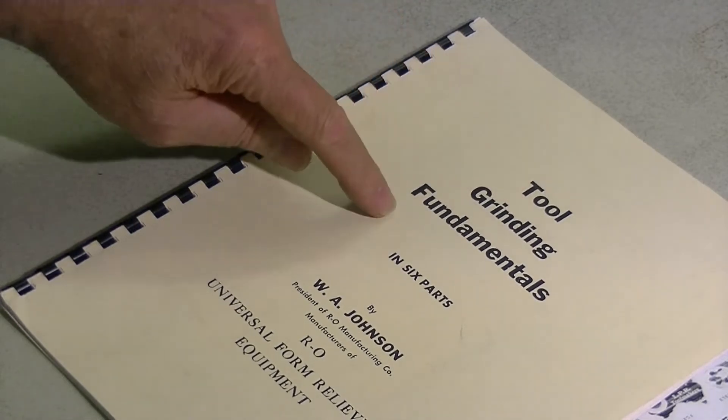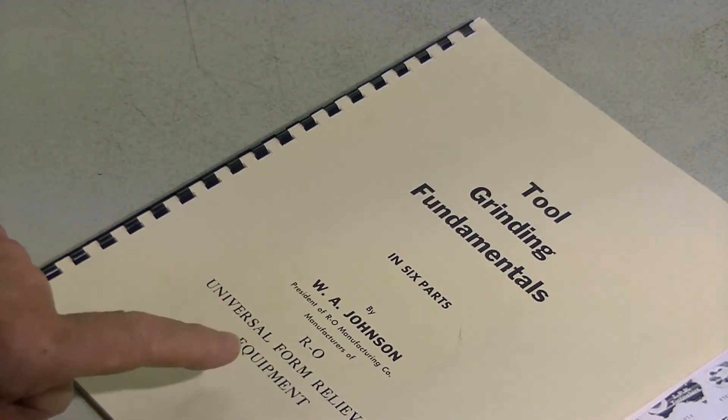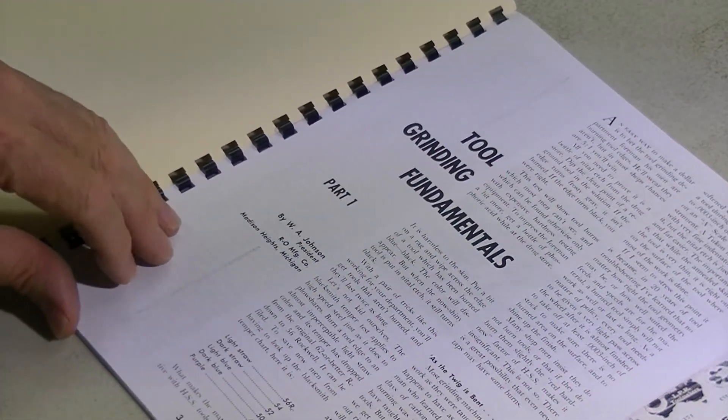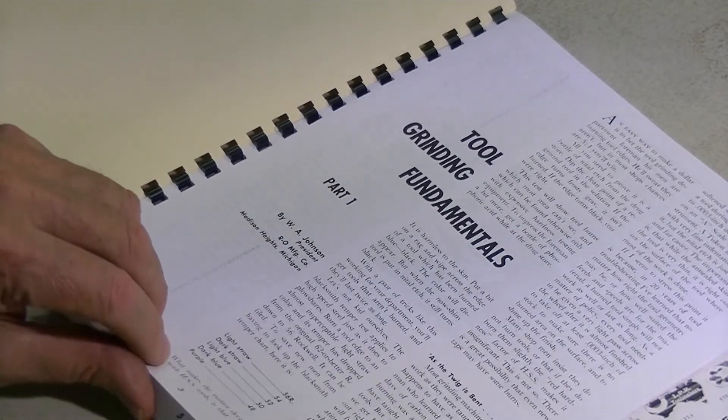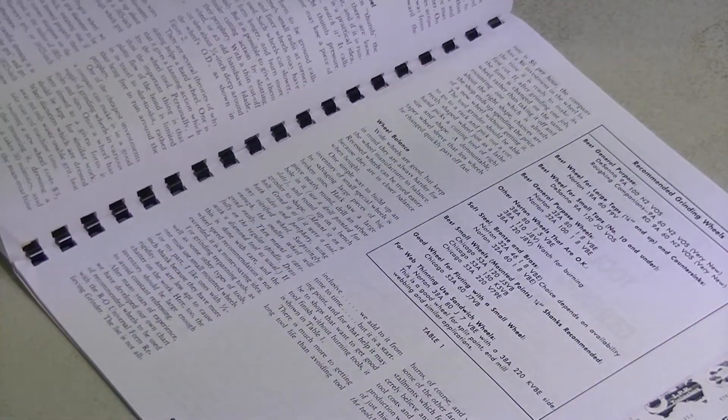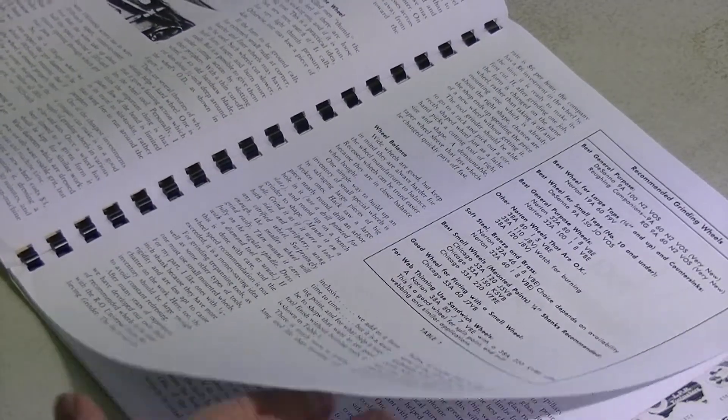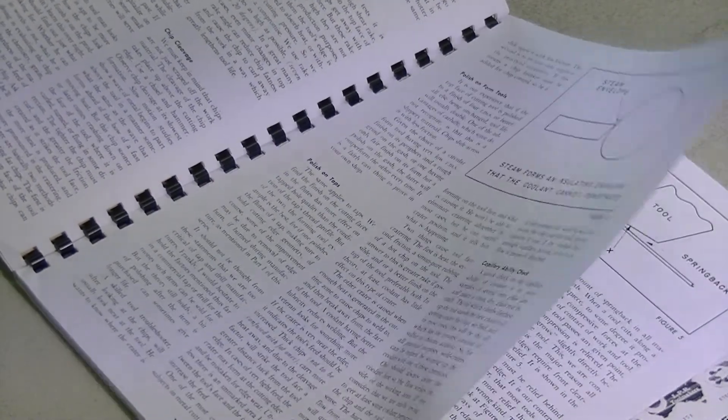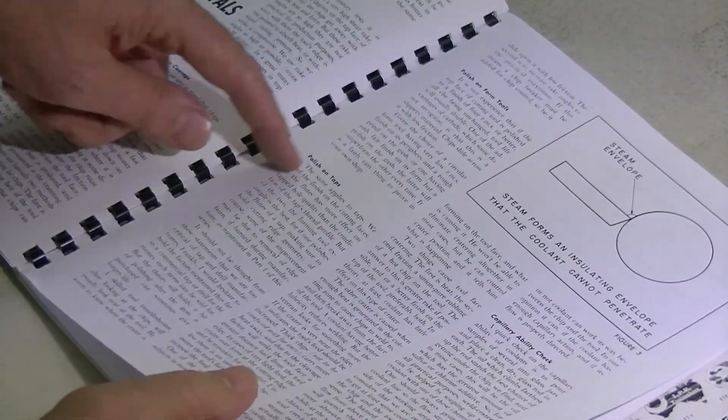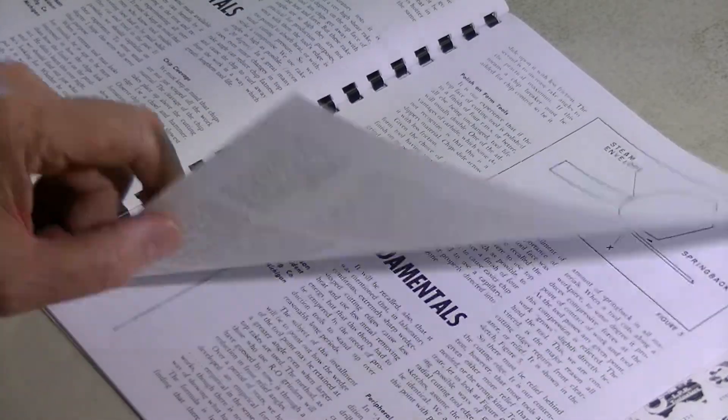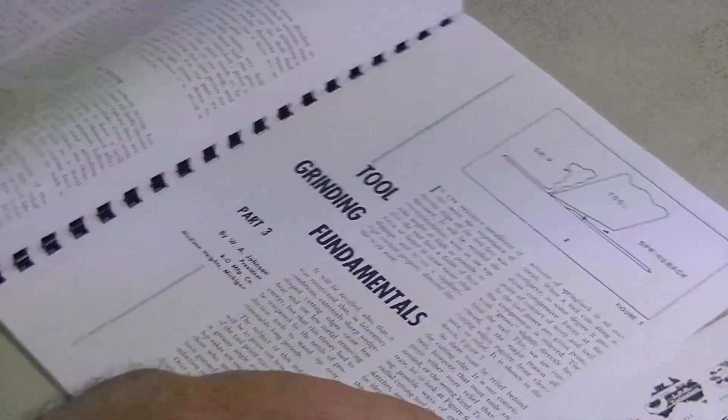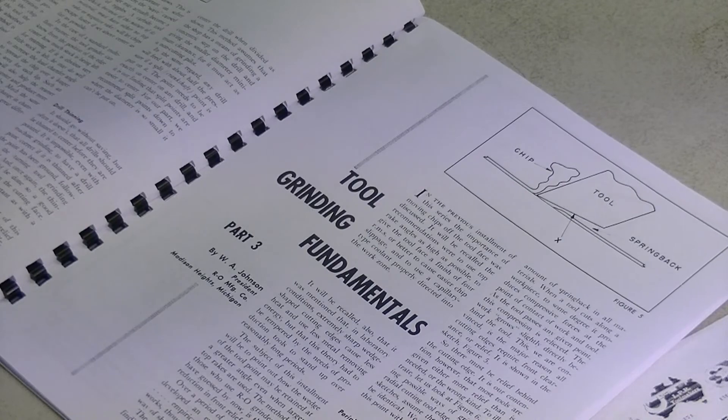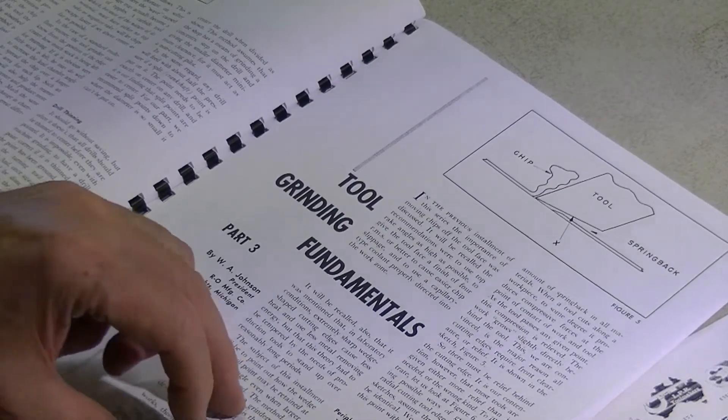Tool Grinding Fundamentals by Johnson comes from Royal Oak Universal Form Relief Equipment - that's the brand of attachment I have. That won't come out very well on the screen for you guys. But setting up the machine, types of wheels and recommendations, what happens with grinding fluid - that's a very interesting read. Polishing the tools and what you get out of polishing. And tool grinding fundamentals.